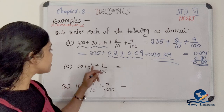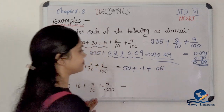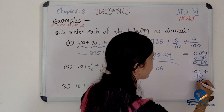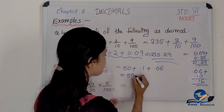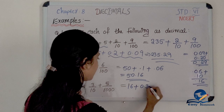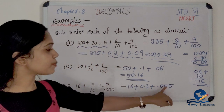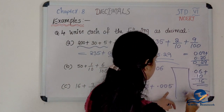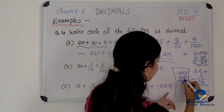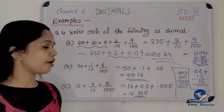Second question: 1 + 3/10 + 6/100. We add 0.10 plus 0.06 to get 0.16. The answer is 1.16. Next: 0.3 plus 0.005. We add these to get 0.305. So the answer is 0.305.